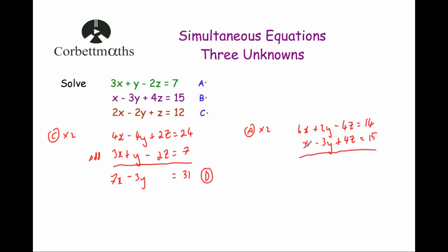6x plus x is 7x. 2y plus minus 3y is minus y. Minus 4z plus 4z cancels out. And 14 plus 15 is 29. So we get 7x minus y equals 29 — let's call that equation E. We now have two equations with just x's and y's: 7x minus 3y equals 31, and 7x minus y equals 29.